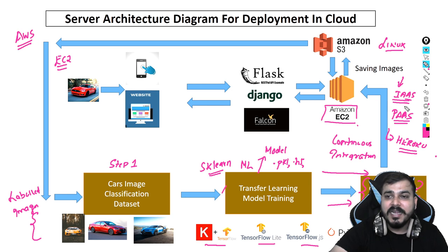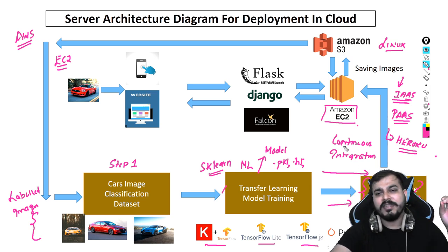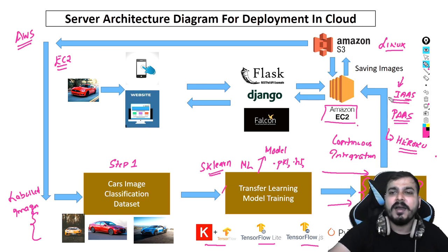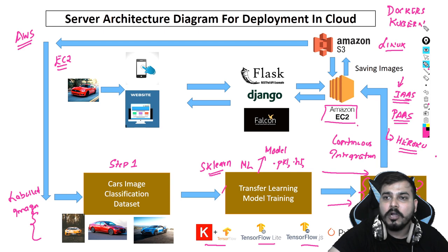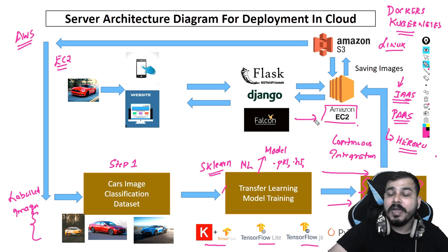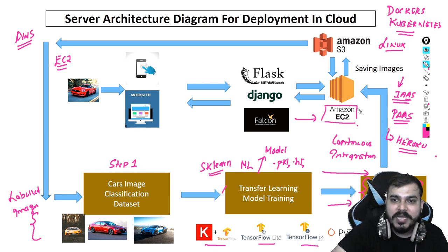Inside the EC2 instance, we do the installation of all required libraries. CI/CD pipelines help us create the requirements.txt file, and everything gets passed over to the Amazon EC2 instance. In the Amazon EC2 instance, we can also implement Docker and Kubernetes. Docker is basically for containerizing and Kubernetes is for scalability. In Amazon EC2, those functionalities are already provided.